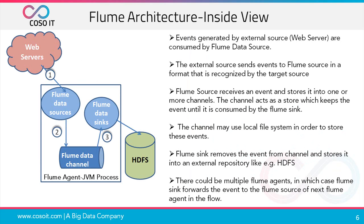Now let us look at the Flume architecture. In this diagram, we see three things: web servers, Flume agent, and HDFS. Events are generated by external sources like web servers and are consumed by the Flume data source. Flume represents data as events — for example, each log entry saved in a web server or a new post added on Twitter can be considered an event. The external source sends events to Flume source in a format recognized by the target source.